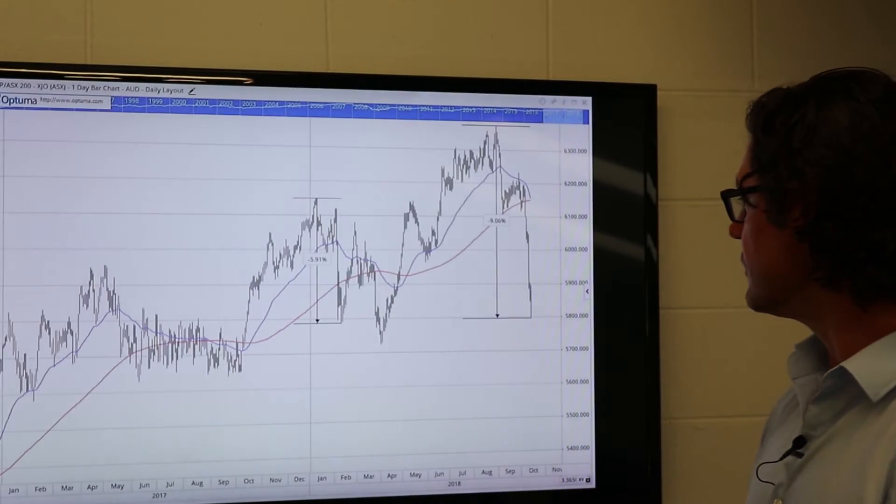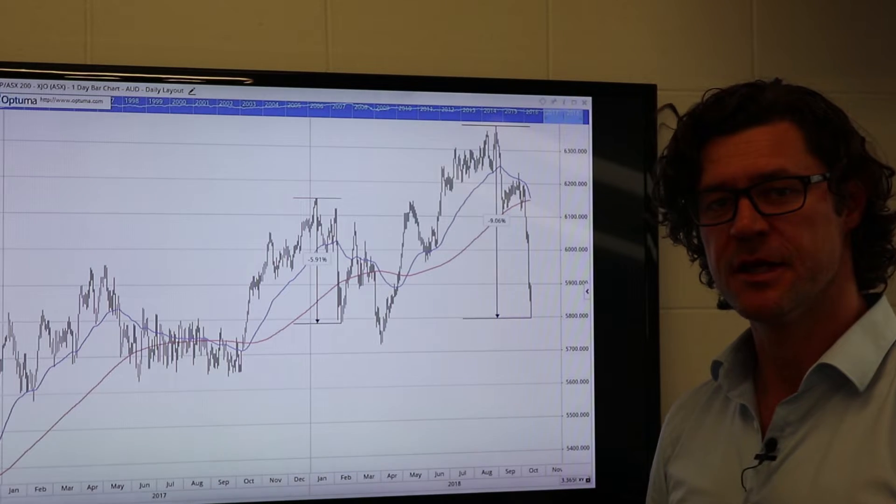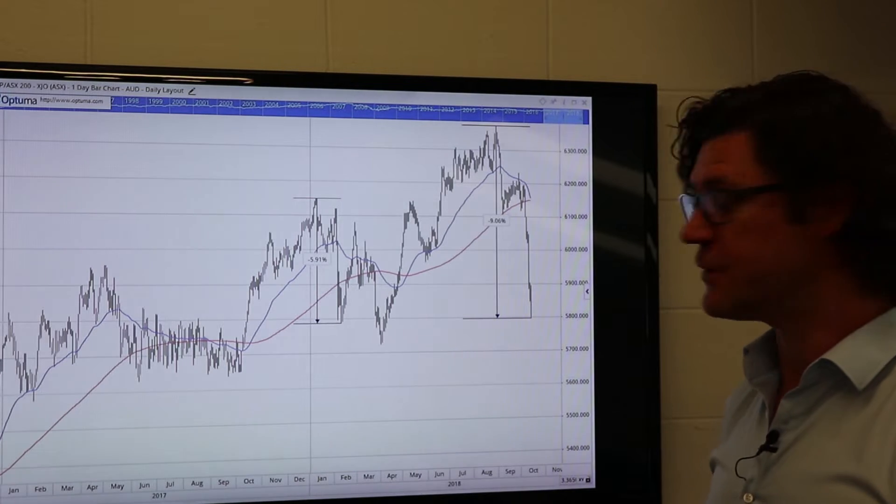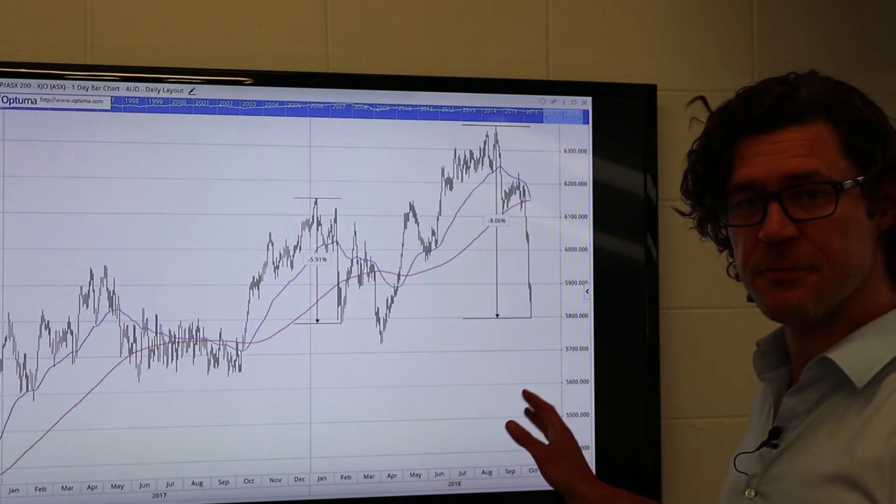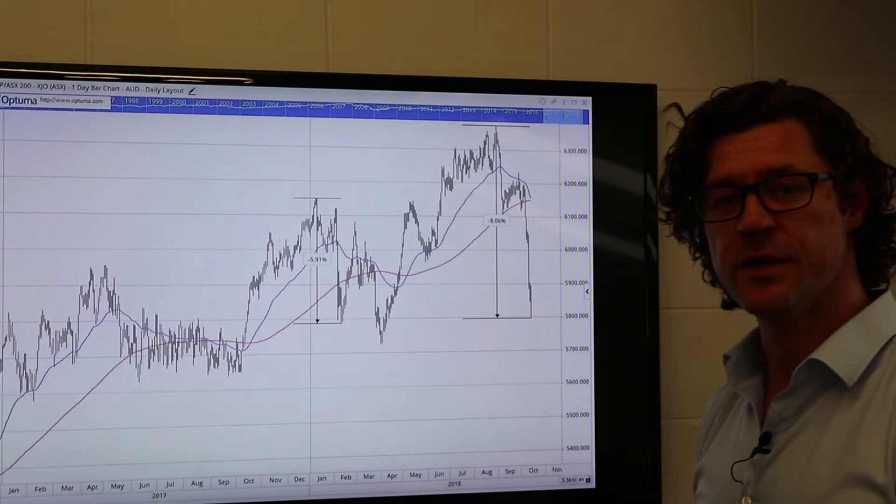The chart I've got for you first up is the ASX200, which is the benchmark index for the Aussie market, and I want to show you a comparison between the falls over the last month or so since the peak in August versus what we had earlier in the year when that volatility hit.